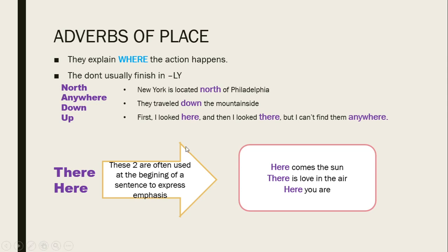Here and there are also adverbs of place. These two are often used at the beginning of a sentence to express emphasis. When 'there' is at the beginning of a sentence, it gives emphasis to what we are saying. We can also find 'there is' when talking about something singular or uncountable, and 'there are' when talking about plurals. Examples: 'Here comes the sun.' 'There is love in the air.' 'Here you are.'